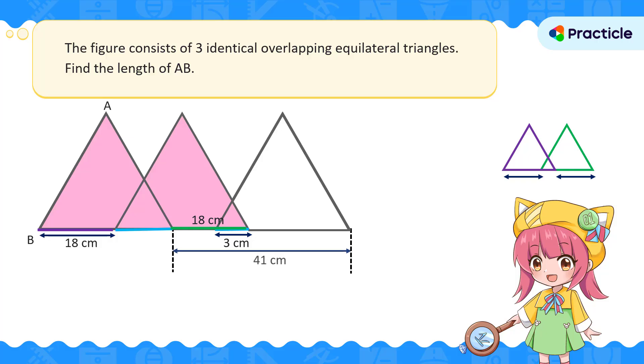We know the total length over here is 41 cm. Now that we've found this length, we can subtract it from 41 cm to find the remaining length over here. 41 cm minus 18 cm is 23 cm. Nice!